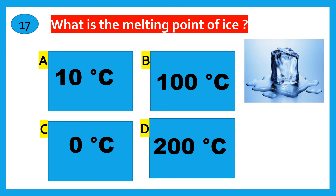What is the melting point of ice? 10 degrees Celsius, 100 degrees Celsius, 0 degrees Celsius, 200 degrees Celsius. The correct answer is 0 degrees Celsius.